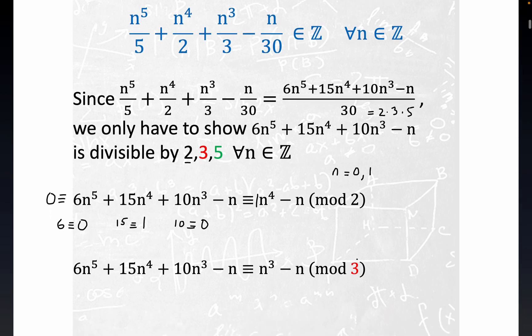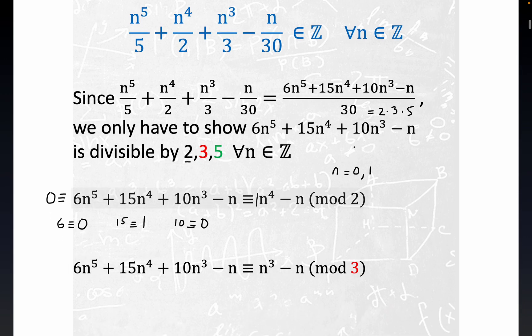This is our original expression that we're trying to show is always an integer. We rewrote it, finding a common denominator, and observed that the numerator had to be a multiple of 30 for this to hold up. And so that's what we're doing right now, and we've done it for 2, now we need to check for 3 and 5.